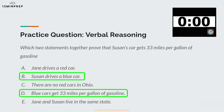The correct answer is statements B and D. We know that Susan's car gets 33 miles per gallon of gasoline. Statement D is the only one that mentions this number, and it says that it applies to blue cars. Statement B states that Susan drives a blue car, meaning that her car gets 33 miles per gallon.